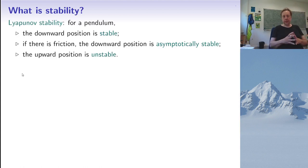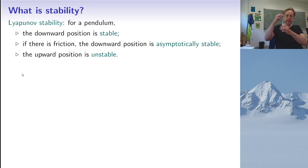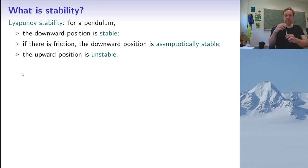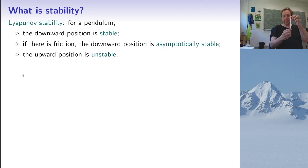Now we have to talk about stability. There are different notions of stability in mathematics, and the one we will use today is called Lyapunov stability. A good example is the pendulum oscillating in a vertical plane, which has two equilibrium positions. The downward vertical is stable — if we move it a little bit, it oscillates but stays nearby. The upward position is unstable: if moved slightly, it tends to move further away.